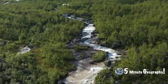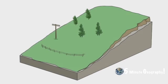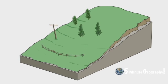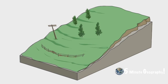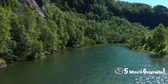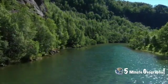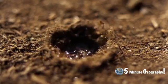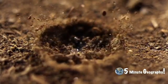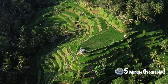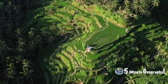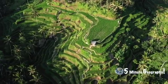Soil creep is the slowest type of mass movement, tending to move about a few millimetres each year. Soil particles move downhill and are only visible after many years through leaning fences, walls, and tilted poles. Solifluction is when soil absorbs water and expands, then when it dries it contracts, causing movement. Step-like features called terracettes are formed.